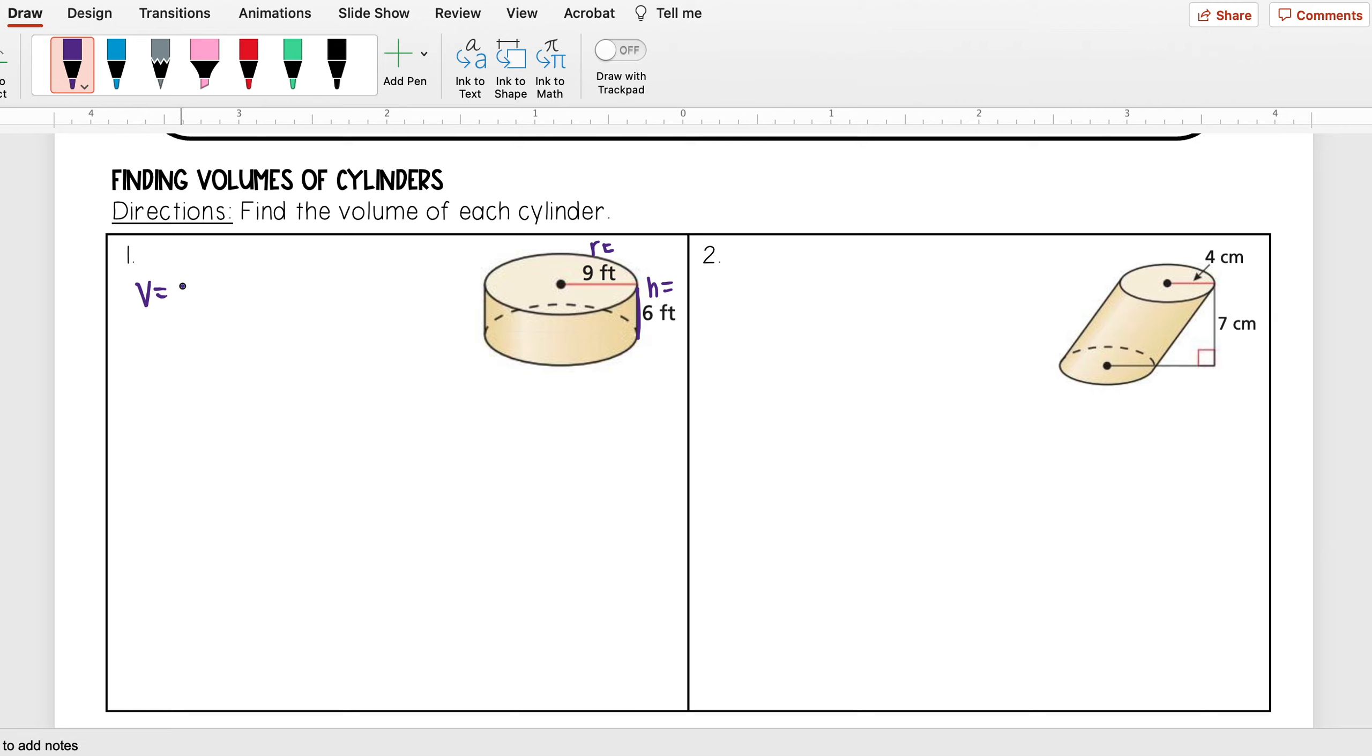And so I have my formula that volume is equal to pi r squared h. And so plugging those values in I have pi r squared, so 9 squared, times h, which is 6. Now when I do 9 squared I get 81, times 6, and I get 486 pi.